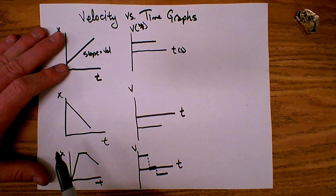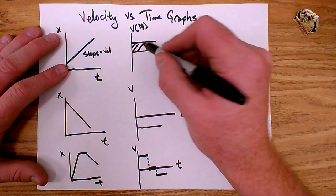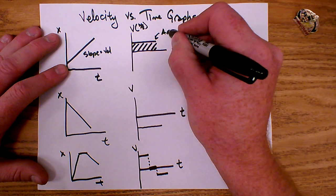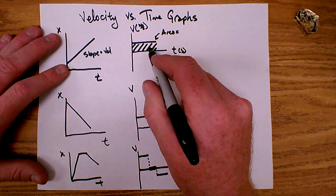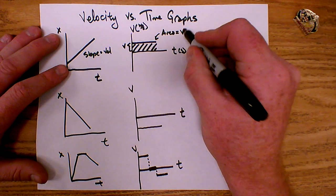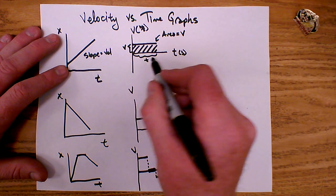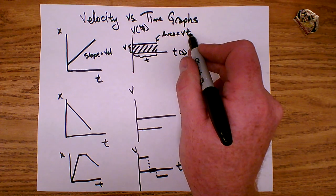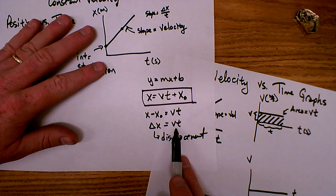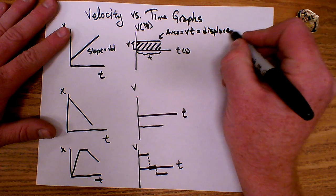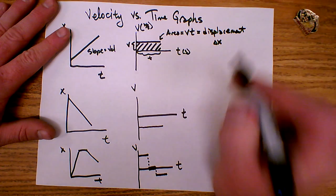On a velocity-time graph, there's something interesting we can find. If I shade in the area under the graph — from whatever's graphed down to the t-axis — I can see that shape is a rectangle. The area of a rectangle is one side times the other. The height of my rectangle is the velocity, and the horizontal side is the time traveled at that velocity. So the area under the velocity-time graph equals v times t, which is the displacement. The area under the graph is equal to the displacement, or delta x, the change of position.